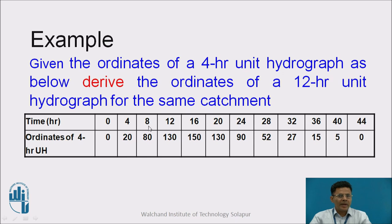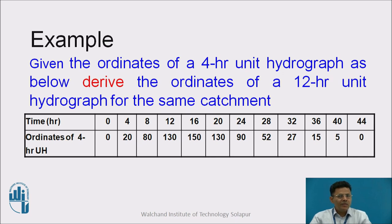The time in hours goes from 0, 4, 8, 12, 16, 20, up to 44 hours. The ordinates of the 4-hour unit hydrograph are 0, 20, 80 m³/s and so on — these represent discharges due to 1 cm rainfall excess in 4 hours at the outlet of the catchment, varying with time.